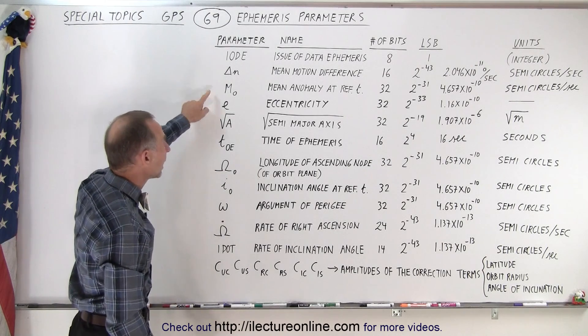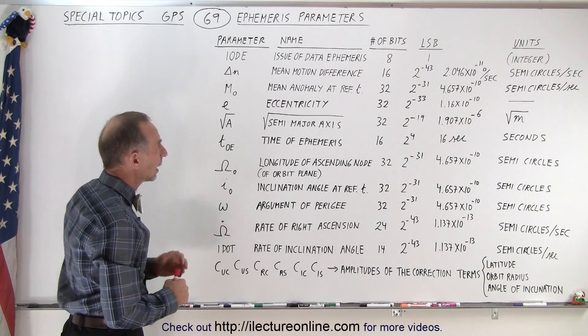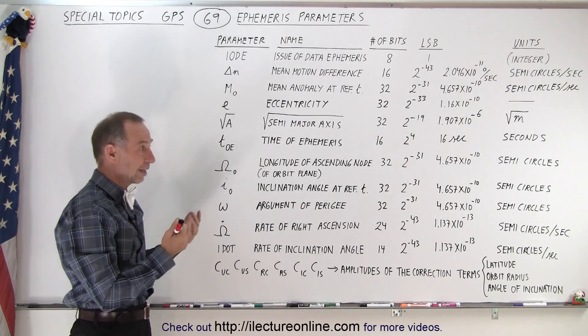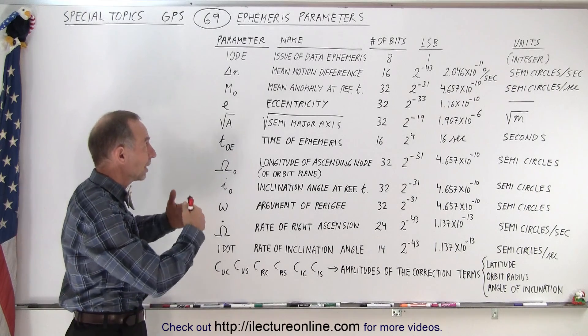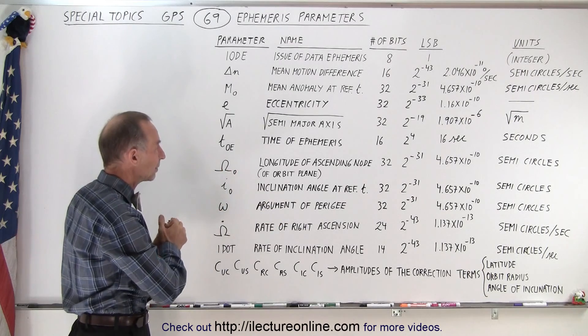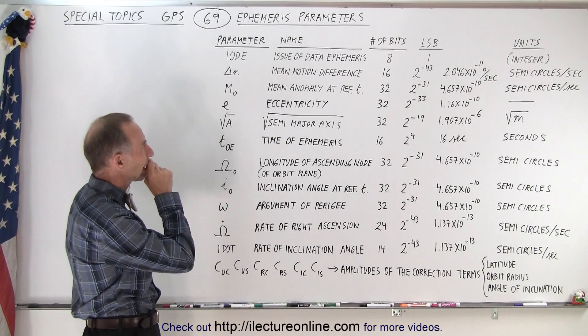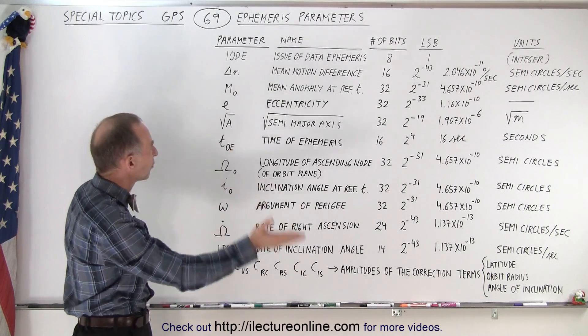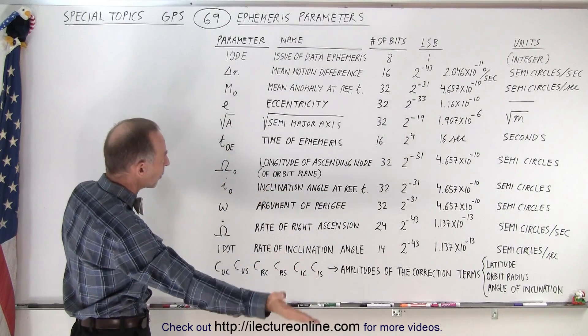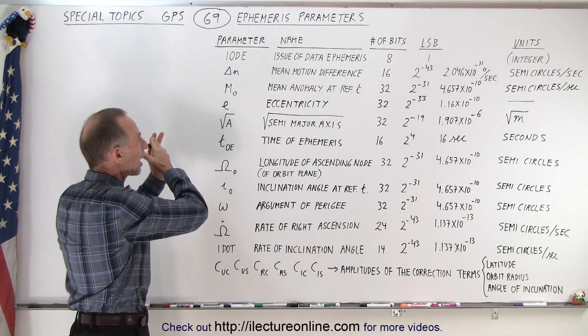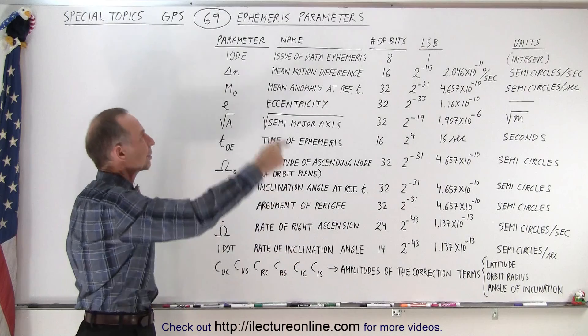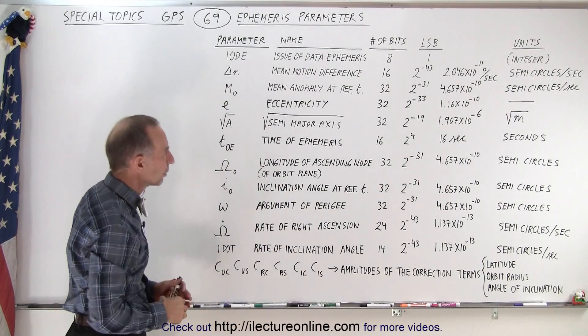Here we have the mean anomaly at the reference time. The mean anomaly, you might think it's anomalies and being anomalous, but it's actually a measurement, an angle measurement at the reference time. I just forgot what the reference position is.